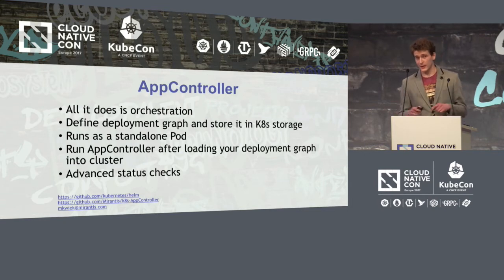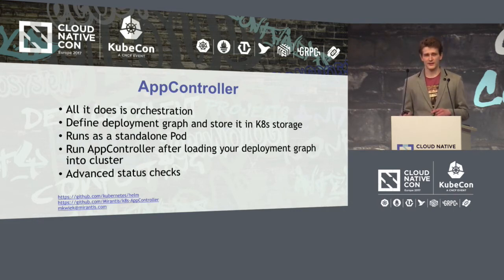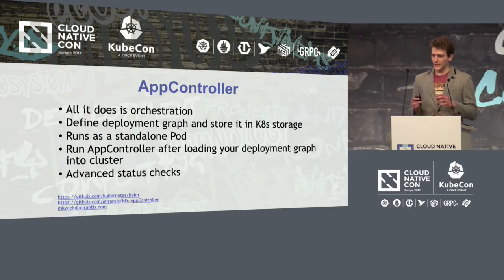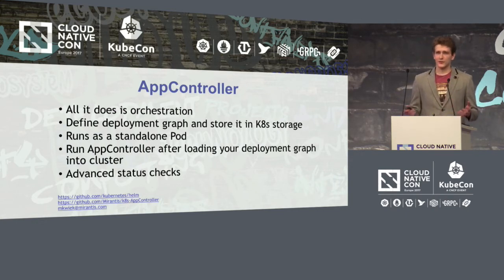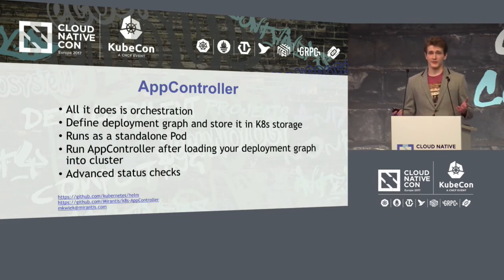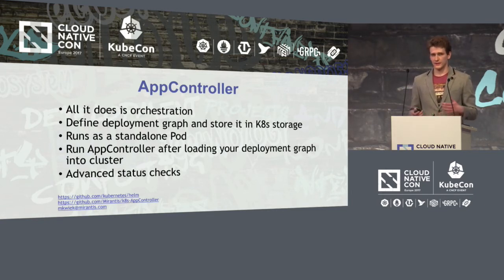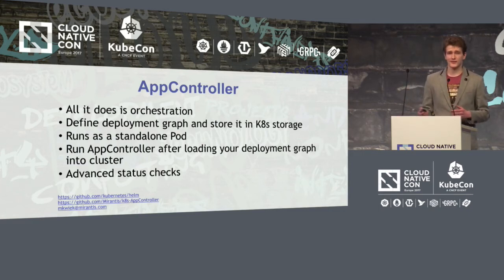This is where AppController comes into the mix. AppController is a project we have been working on at Mirantis since the end of last year. It is focused solely on orchestration inside a Kubernetes cluster. It runs as a standalone pod. You define your deployment graph and store it in Kubernetes storage — no additional storage needed. It traverses the deployment graph topologically so that children in the graph are created after parents, and it also has advanced status checks.